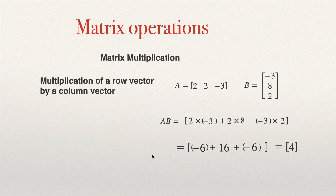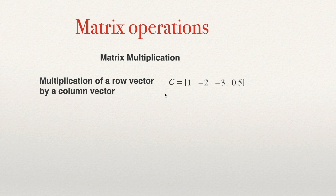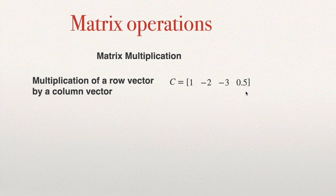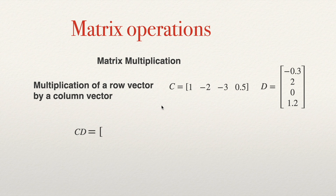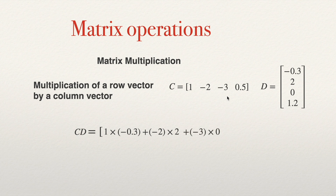Let's make another example. We have a row matrix C that multiplies a column vector D. First the row, second the column — that is the way multiplication is defined: row by columns. If you multiply C by D, you multiply 1 by negative 0.3 (the first elements of each vector), plus negative 2 times 2, plus negative 3 times 0, plus 0.5 multiplied by 1.2.